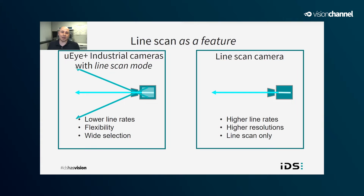On the other hand, there are advantages to using an IDS area scan camera with a line scan operation mode. One advantage is flexibility: the camera offers two different operation modes, so your application can have two modes as well. For example, you might use area scan imaging for setting alignment and focus, and then line scan imaging for the rest of the application. IDS cameras can also handle various types of static and dynamic scenes as well as scenes with scanning motion. We're available in a wide range of interfaces — USB3, GigE, 10GigE — all based on the vision standard, and we offer a wide range of form factors.